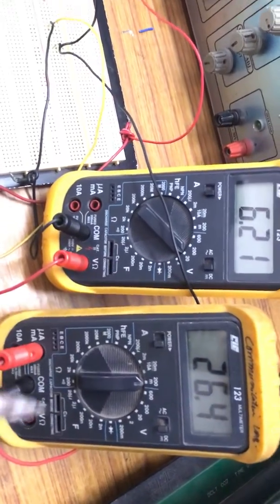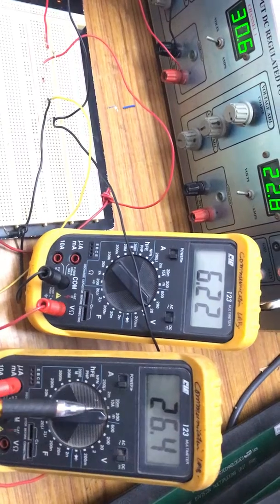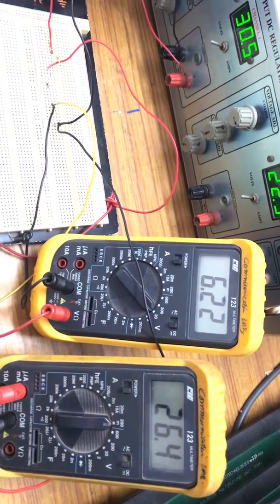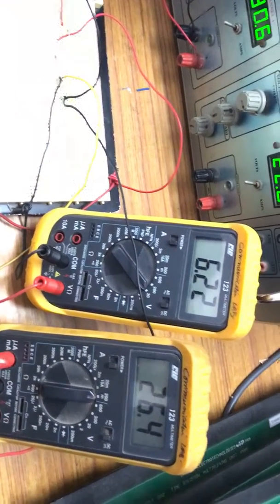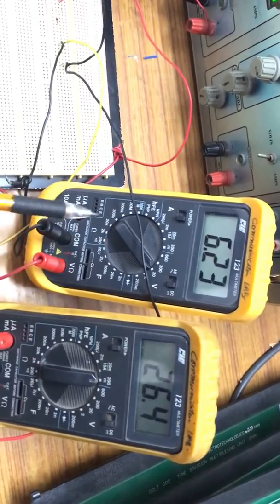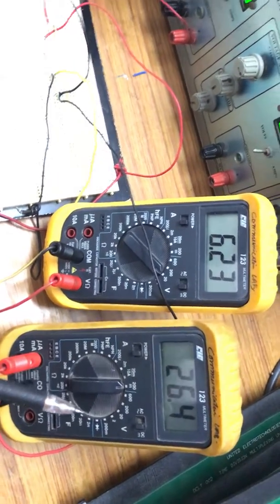In a normal PN junction diode, the reverse saturation current increases, which is 0.1 microamperes, that is leakage current. The most important point of the Zener diode is that it operates in forward bias and reverse bias. Thank you.